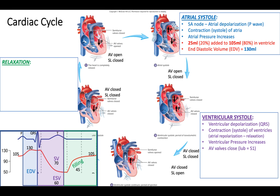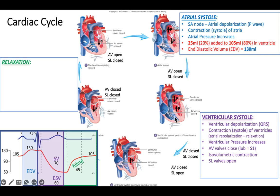Once the AV valves close, all valves are closed — we have what's known as isovolumetric contraction. No blood can enter because the AV valves are closed, and no blood can leave because the semilunar valves are closed, but the ventricles are still contracting. This allows us to really raise the pressure so we can then open the semilunar valves. Once the pressure is high enough, the semilunar valves open and we can eject blood. The volume ejected from a ventricle in one beat is known as stroke volume — 70 milliliters on each side for our purposes.